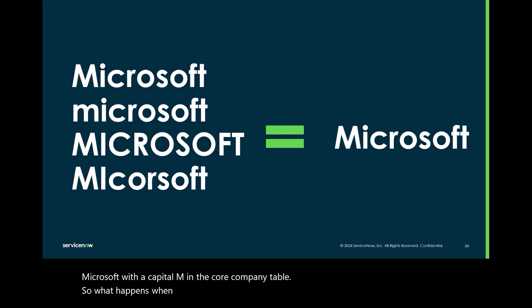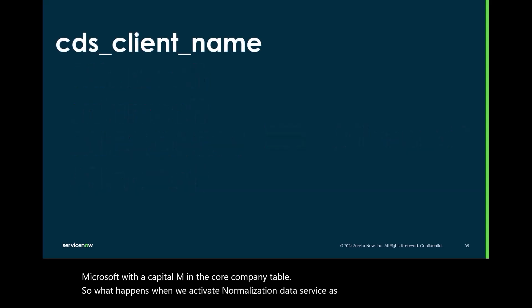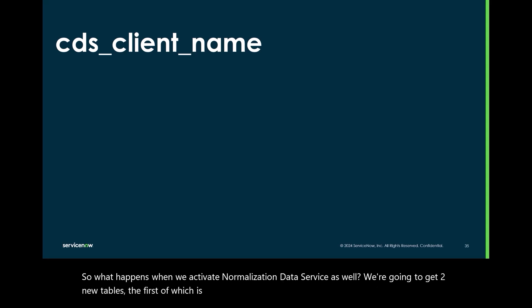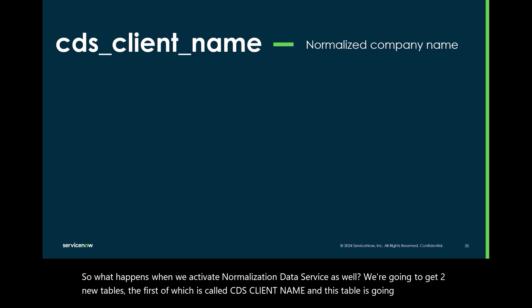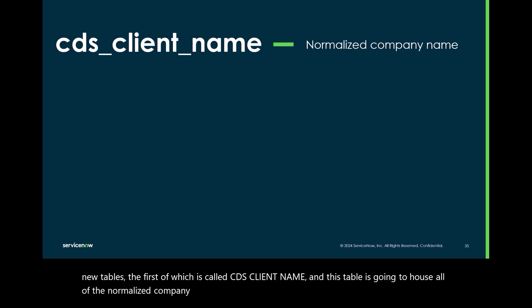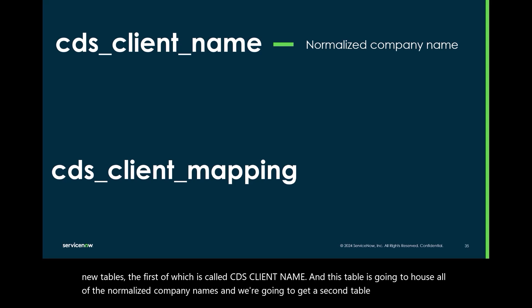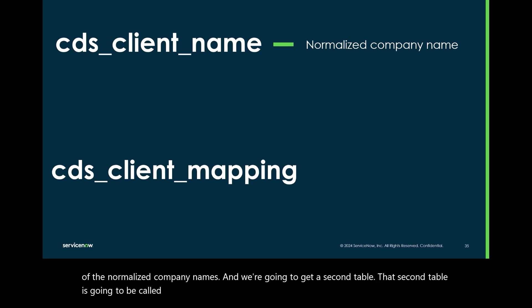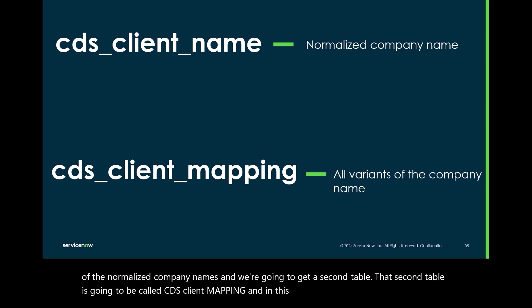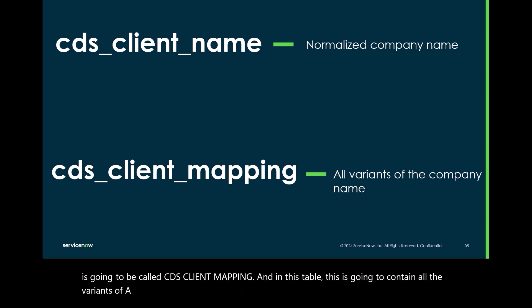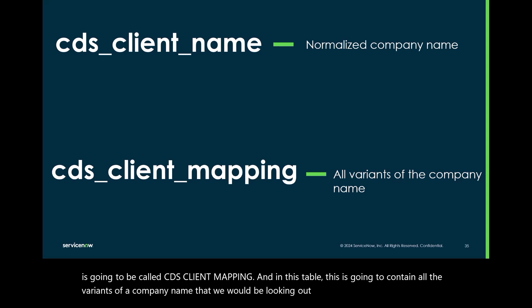When we activate Normalization Data Services, we're going to get two new tables. The first is called CDS Client Name, and this table is going to house all the normalized company names. The second table is called CDS Client Mapping, and this table is going to contain all the variants of a company name that we would be looking out for to standardize into a normalized value.